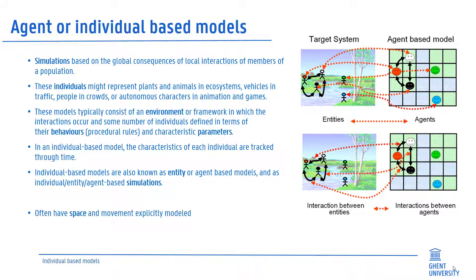Agent or individual-based models are simulations based on the global consequences of local interactions of members of a population. These individuals might represent plants and animals in ecosystems, vehicles in traffic, people in crowds, or autonomous characters in animations and games. These models typically consist of an environment or framework in which the interactions occur and some number of individuals defined in terms of their behaviors and their characteristic parameters.